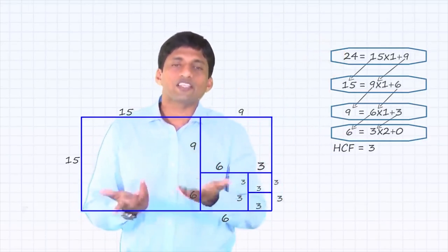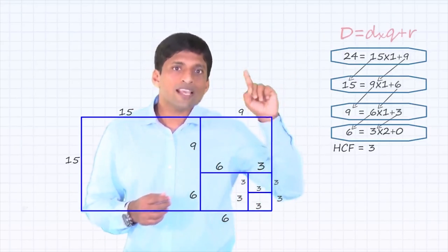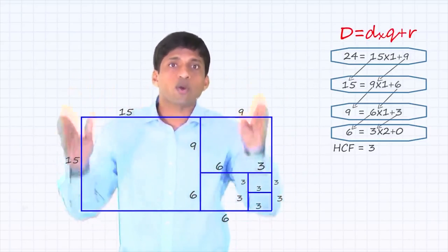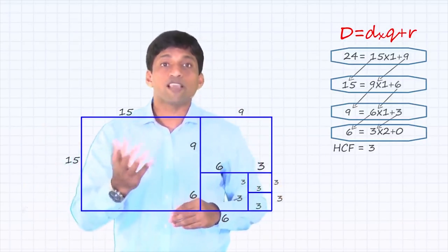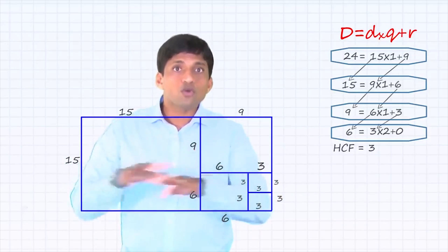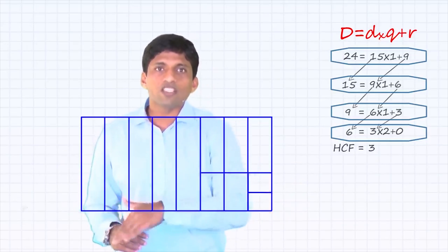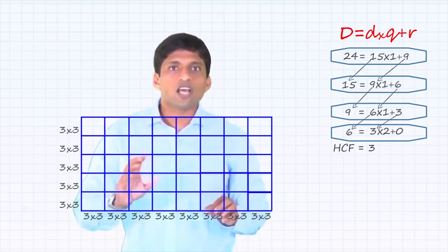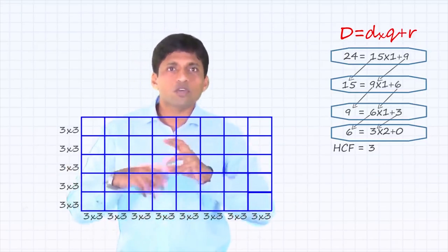Every step here is actually a cut or a division. So this way, if you learn by understanding using numbers, generalizing with variables, and relating to a scenario — that is why I used a rectangular wall of 24 by 15 where you fill it using square tiles of the same size. The maximum side of that square tile which can uniformly fill this is 3. Using 3 by 3 tiles, you can completely fill both dimensions.